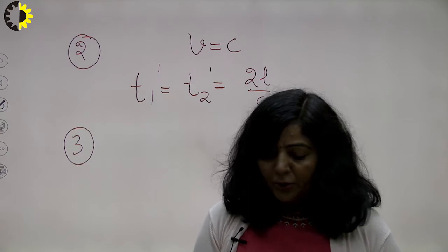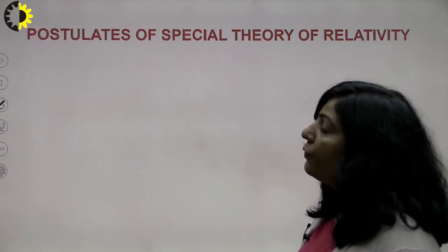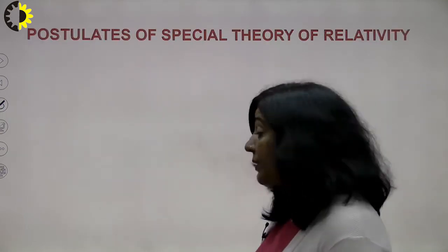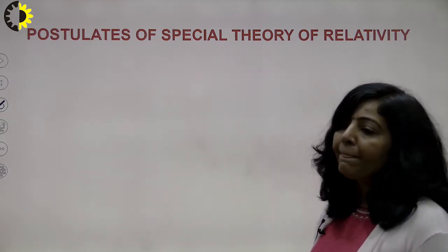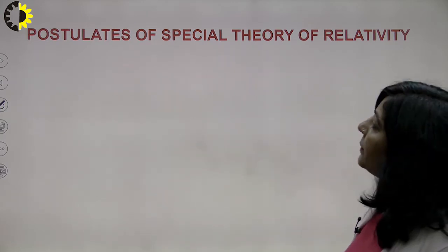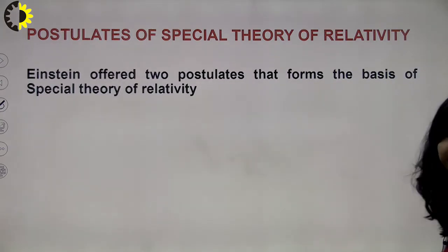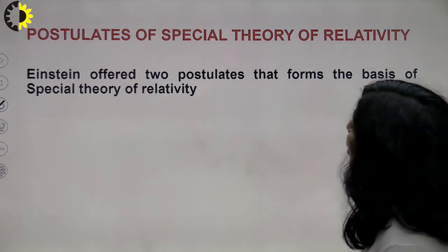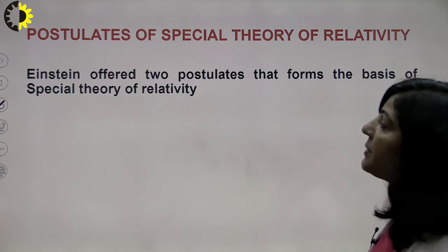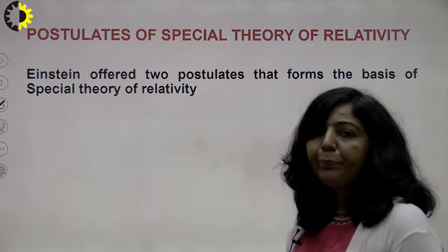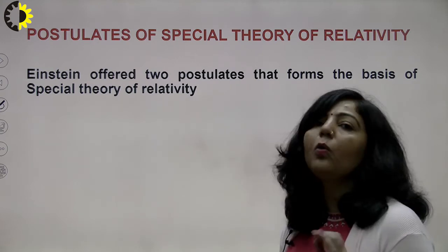The topic of today's discussion is the Special Theory of Relativity, and using that theory we will derive certain equations which are the basis of each and every physical parameter in relativistic mechanics. First I will discuss the postulates of the Special Theory of Relativity. Albert Einstein in 1905 offered two postulates that form the basis of this theory.